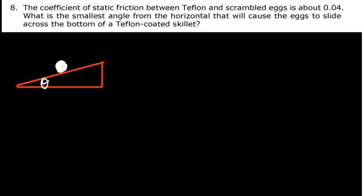Number eight: The coefficient of static friction between Teflon and scrambled eggs is about 0.04. What is the smallest angle from the horizontal that will cause the eggs to slide across the bottom of a Teflon-coated skillet? This is an inclined plane problem. The egg is on an incline at a small angle. Friction always opposes motion, and on an incline Fg tries to pull the object down.